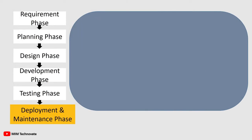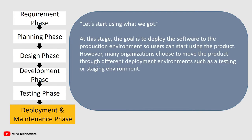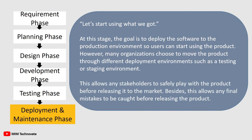Deployment and Maintenance Phase — Let's start using what we got. At this stage the goal is to deploy the software to the production environment so users can start using the product. However, many organizations choose to move the product to different deployment environments such as a testing or staging environment. This allows stakeholders to safely play with the product before releasing it to the market, and allows any final mistakes to be caught before the product is released.